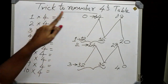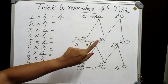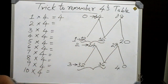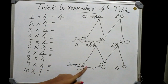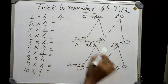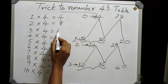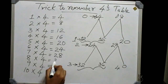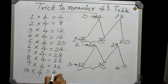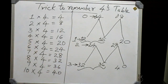So the complete multiplication table of 4: 1 into 4 equals 4, 2 into 4 equals 8, 3 into 4 equals 12, 4 into 4 equals 16, 5 into 4 equals 20, 6 into 4 equals 24, 7 into 4 equals 28, 8 into 4 equals 32, 9 into 4 equals 36, and 10 into 4 equals 40. So just write them in this order: 4, 8, 12, 16, 20, 24, 28, 32, 36, and 40. This is the multiplication table of 4 — simple.